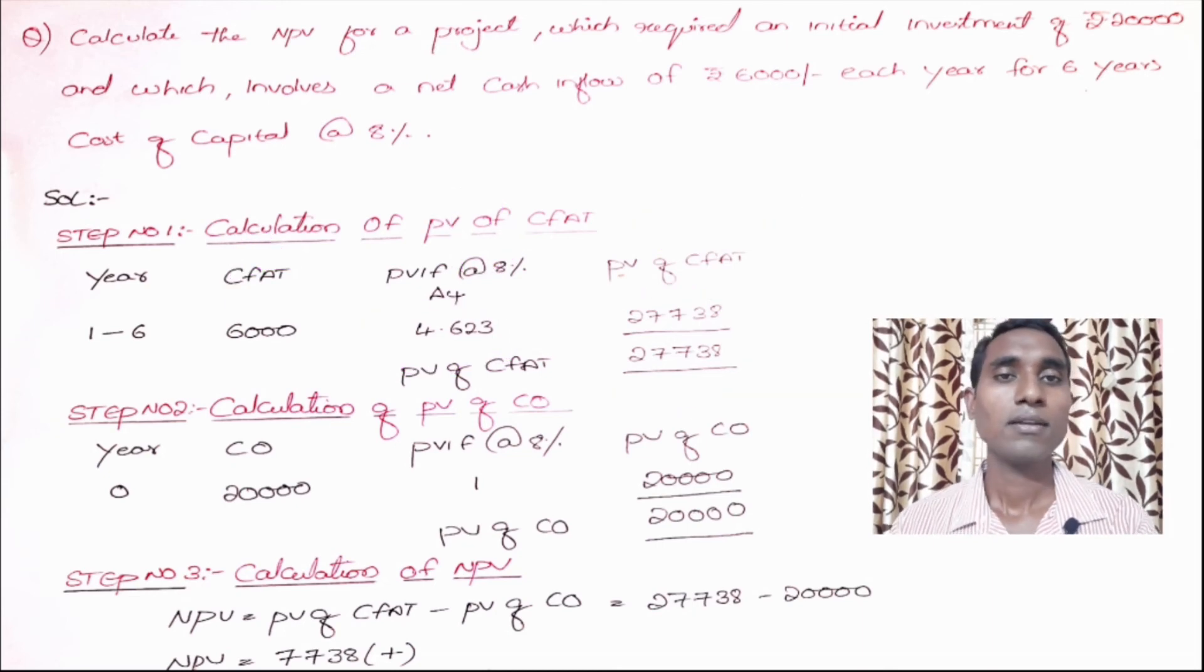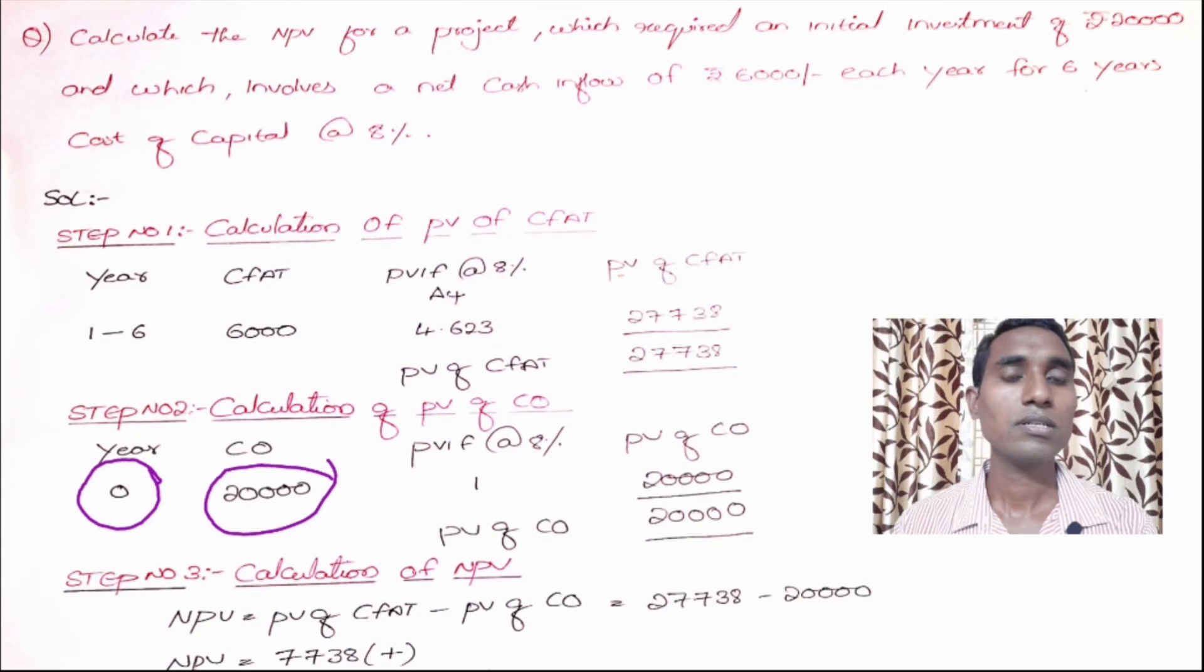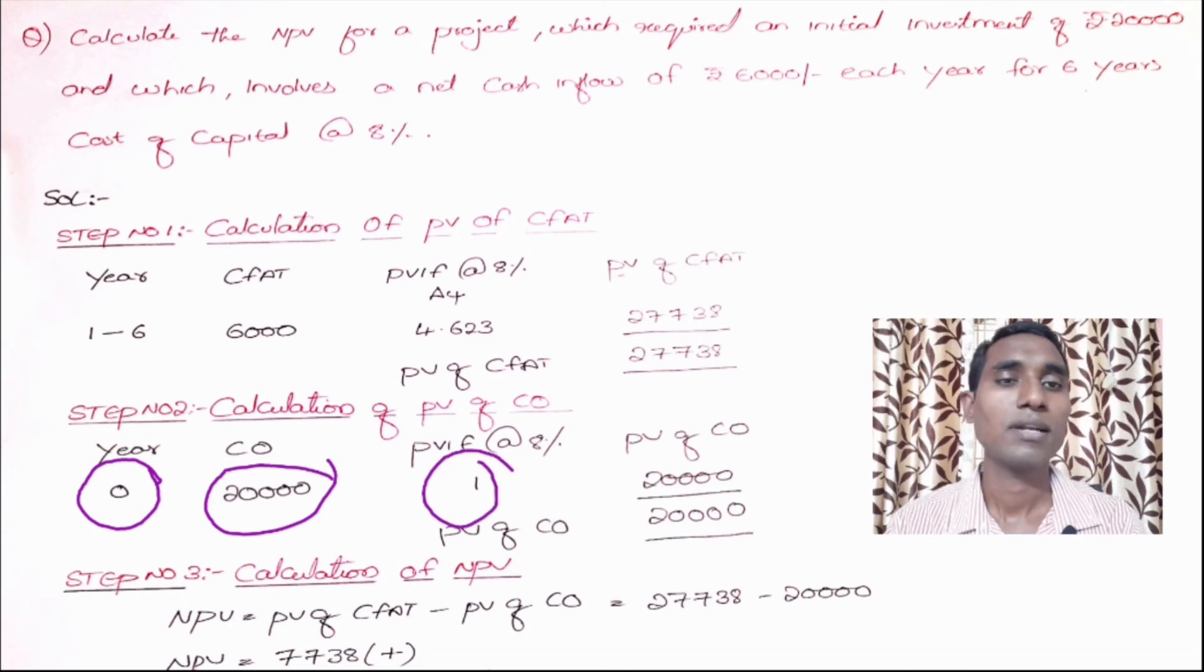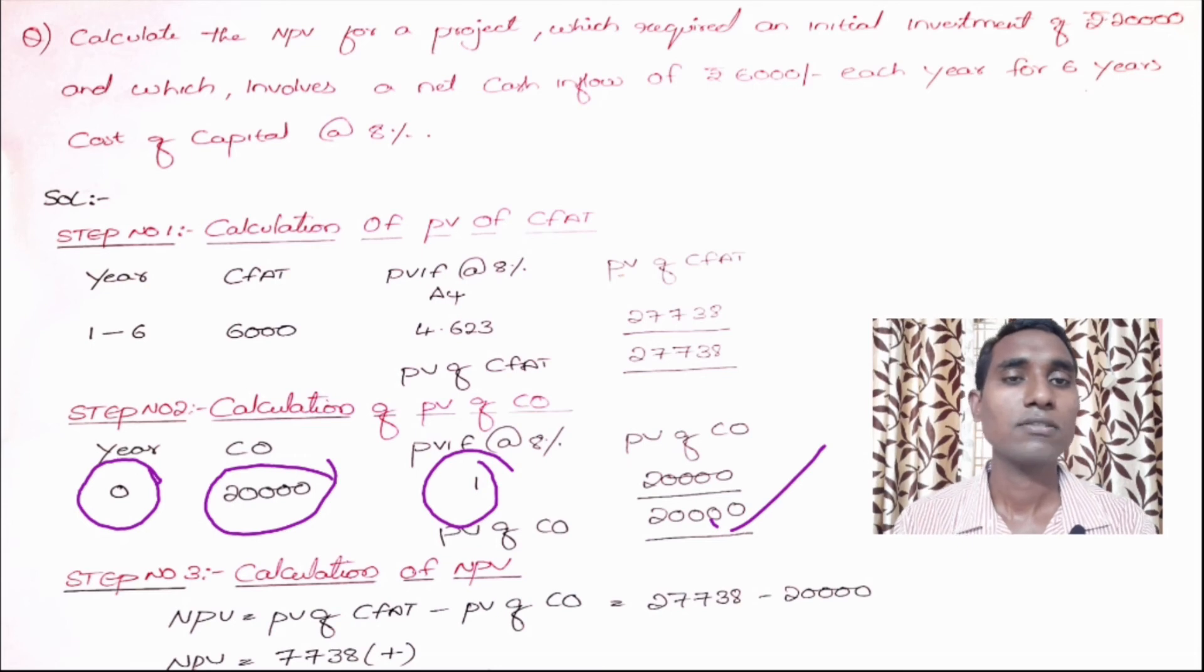Step number two: calculation of PV of cash outflow. This remains same. Investment here at year zero is 20,000. Whether it is A3 table or A4 table or whatever the cost of capital, it always remains one, so the PV of cash outflow is 20,000.